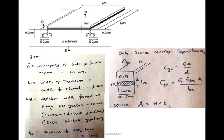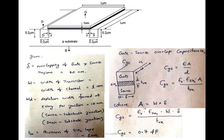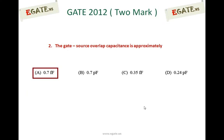The area of the parallel plate is lambda × W. Substituting the values: C_GS = ε₀ × ε_SiO2 × (λ × W) / T_OX. Epsilon-naught, epsilon of SiO2, W, lambda, and T_OX are all given. Substituting all values gives the correct answer of 0.7 femtofarads. Femto means 10⁻¹⁵, so C_GS = 0.7×10⁻¹⁵ farads. The correct answer is option A: 0.7 femtofarads.